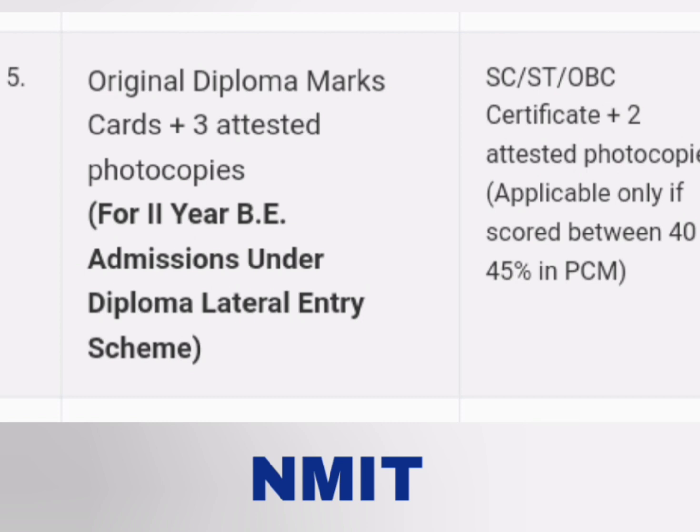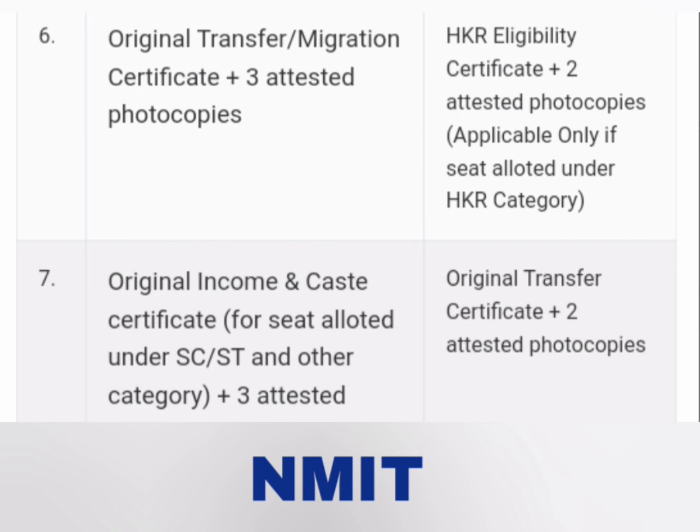The sixth document is the original transfer and migration certificate plus three attested copies for KCET students. For COMED-K HKR students, they also need to bring the same along with the HKR eligibility certificate plus two attested copies. This is applicable only for HKR students.